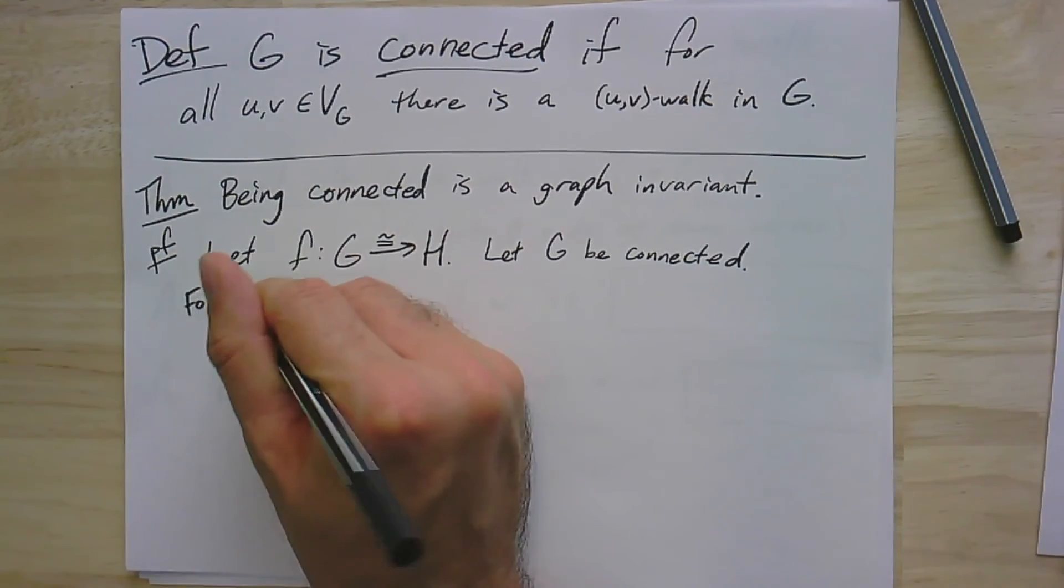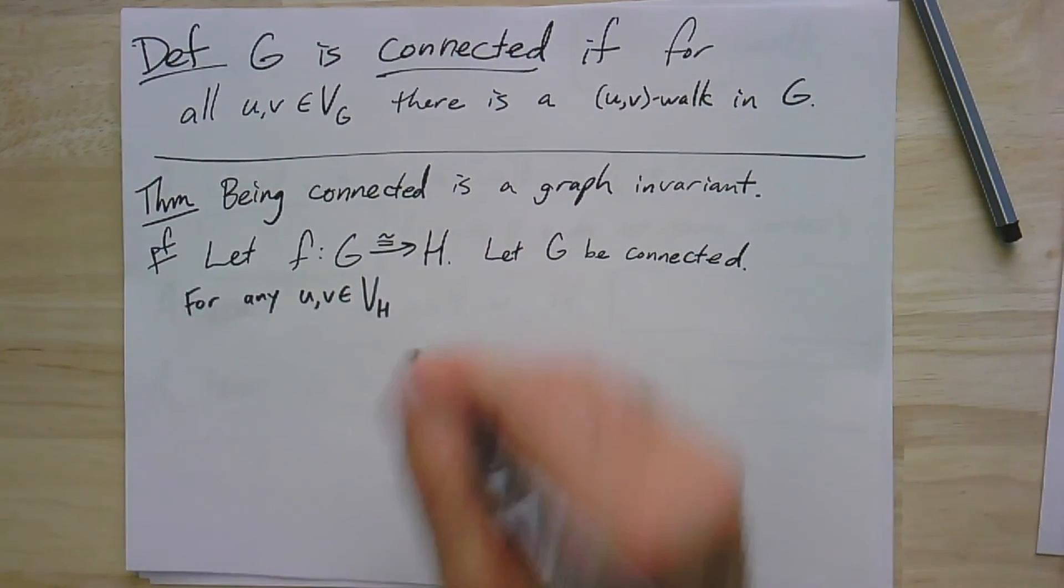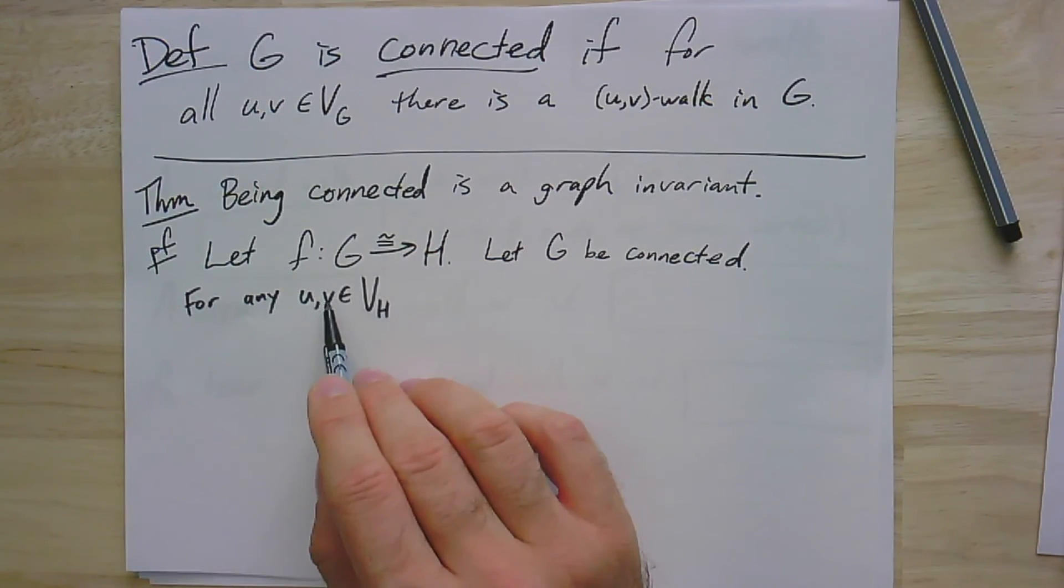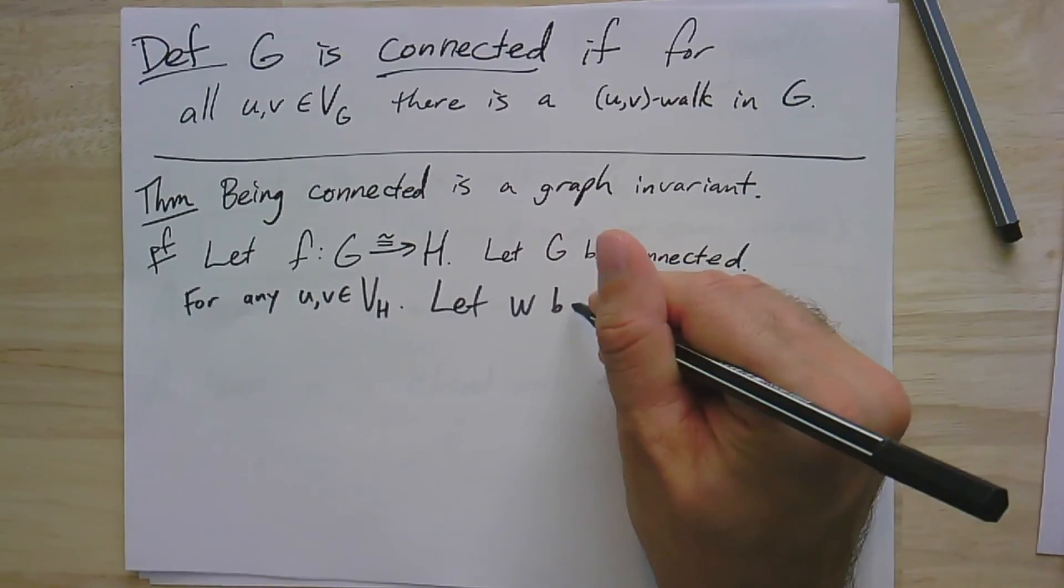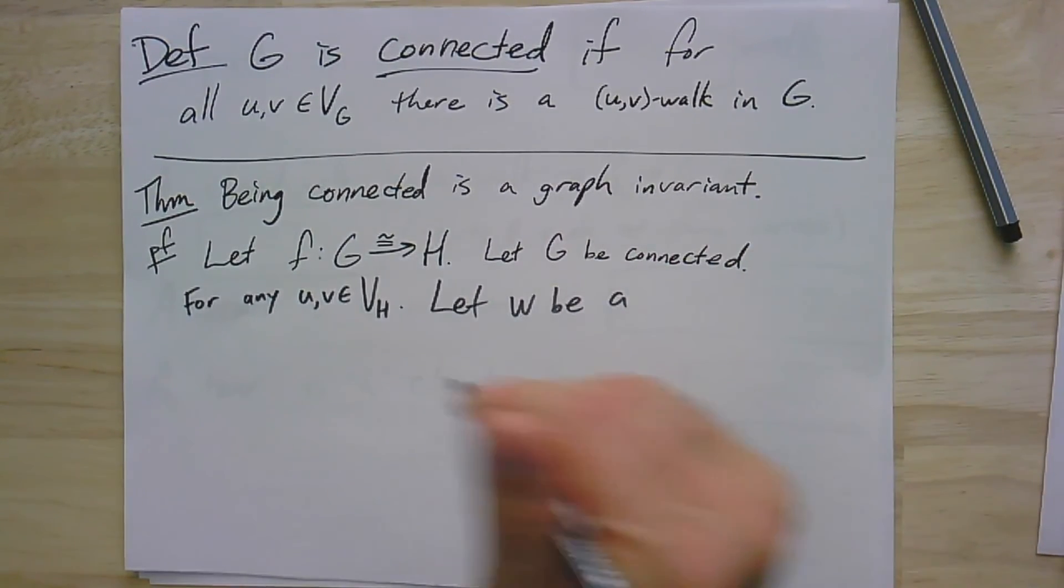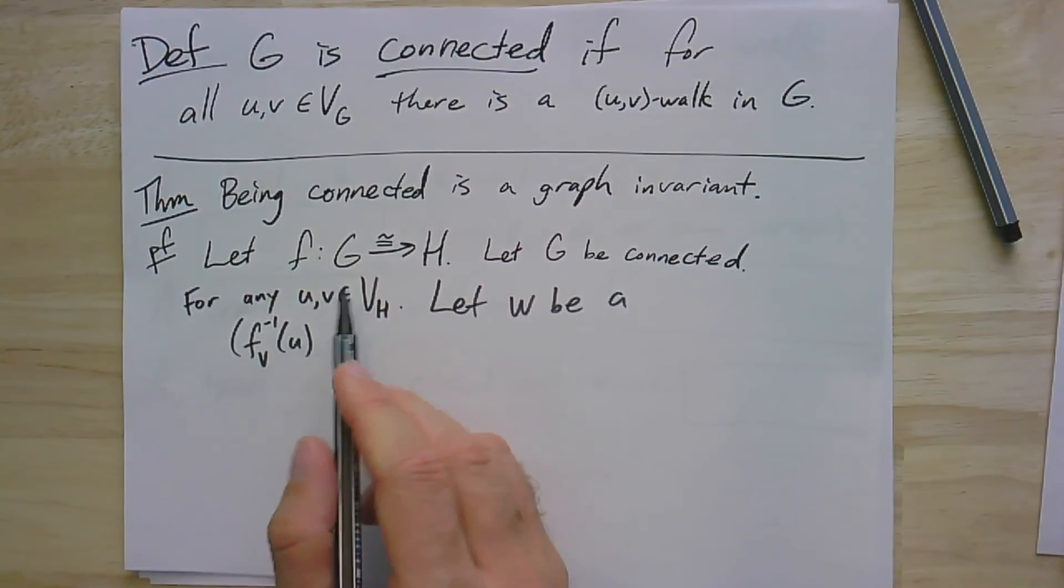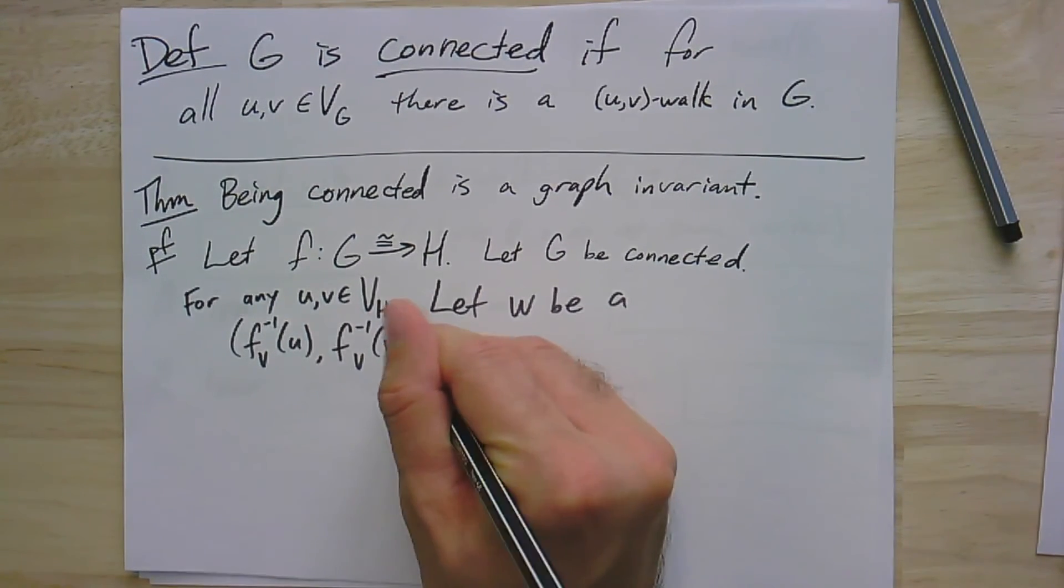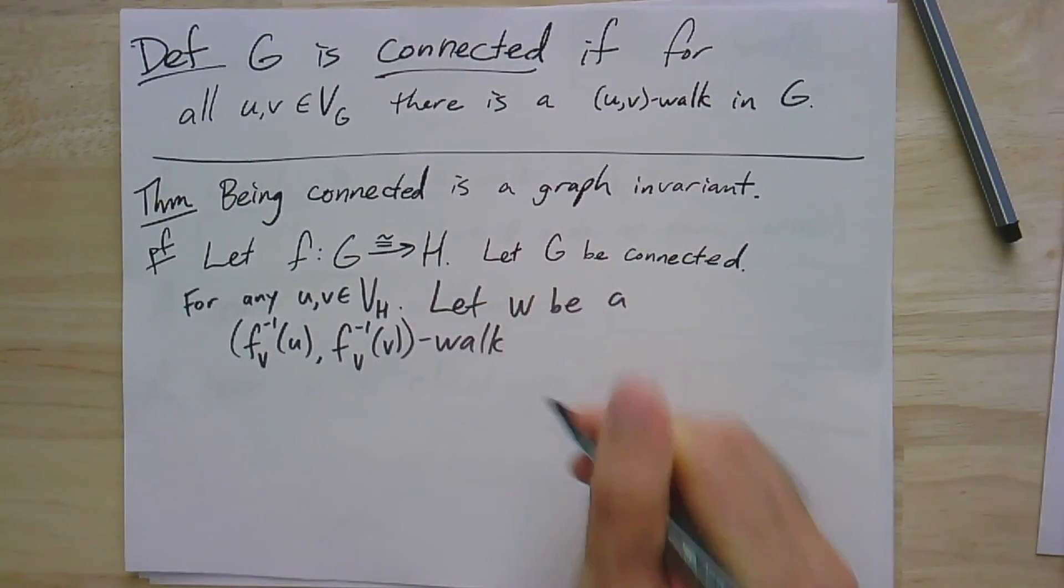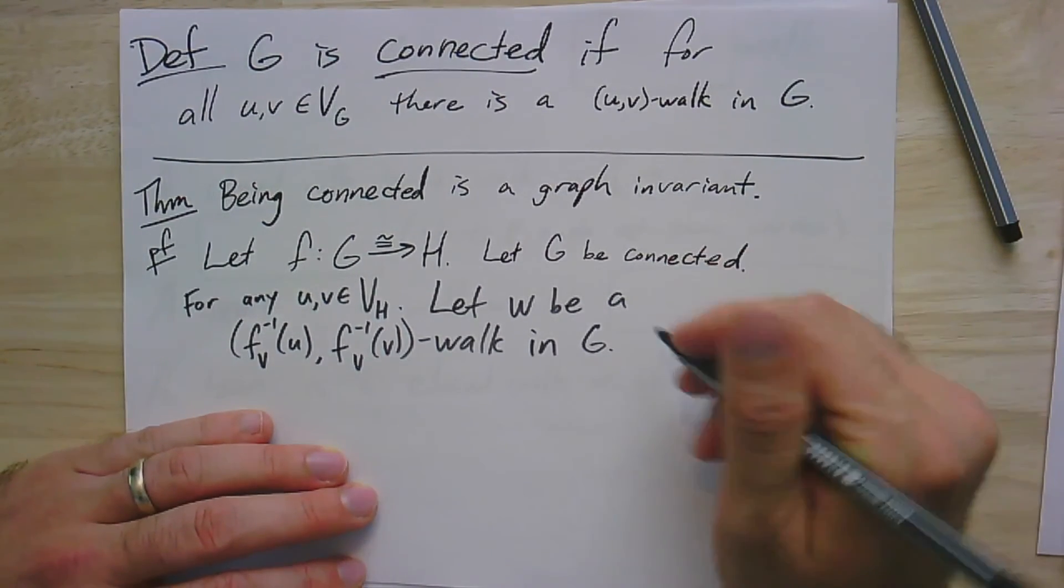So we want to show that H must also be connected. What we do is for any vertices u, v in H, so I've got two vertices over in H. Then I'm going to have vertices that correspond to these two in the graph G. So let W be our walk. It's going to be a walk that goes from F inverse of u, remember that F_v is going to be a bijection for isomorphism, to F inverse of v. This is going to be a walk between these two in G, which must exist because if G is connected then every pair of vertices are connected by a walk, that's the definition of being connected.